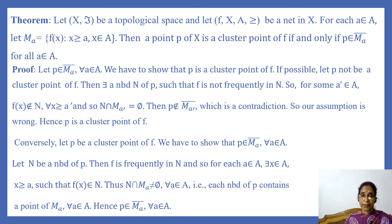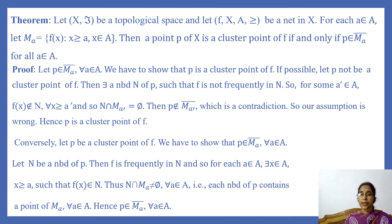The second theorem states: let (X, T) be a topological space and let f(x), (a, ≥), be a net in X. For each a in A, define Mₐ = {f(x) : x ≥ a, x ∈ A}, so Mₐ contains the f-images of all elements of A greater than or equal to a. Then a point p of X is a cluster point of f if and only if p belongs to the closure of Mₐ for every a in A.